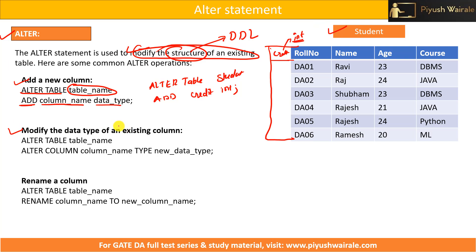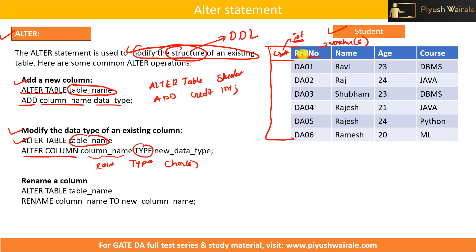To modify the data type of an existing column — for example, changing roll_number from VARCHAR(6) to CHAR(6) — use: ALTER TABLE student ALTER COLUMN roll_number TYPE CHAR(6). The TYPE keyword ensures we are altering the data type of that particular column.